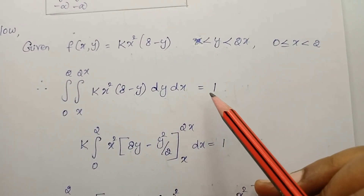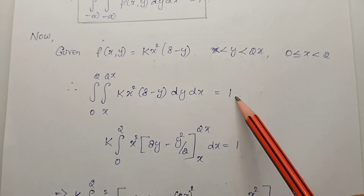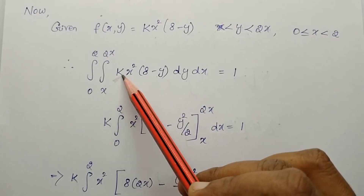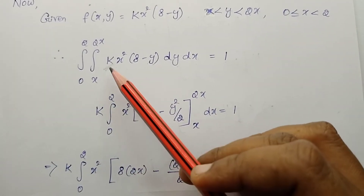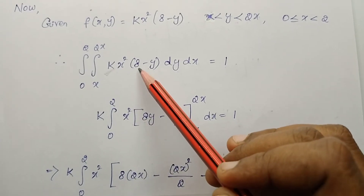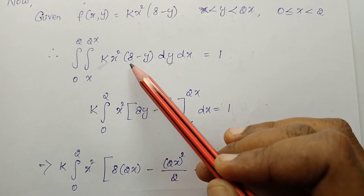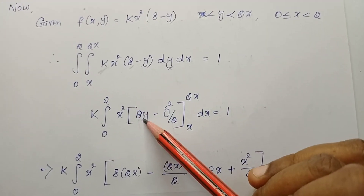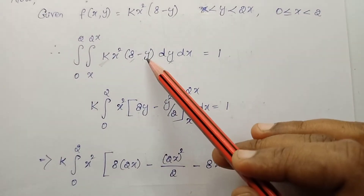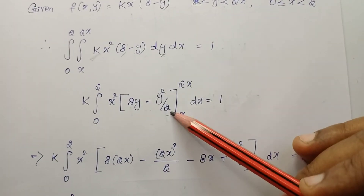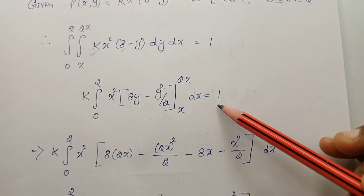Since y is dependent on x, we first integrate with respect to y. Treating kx squared as constant with respect to y, we integrate (8 minus y) with respect to y. The limits for y are x to 2x. This integral equals 1.